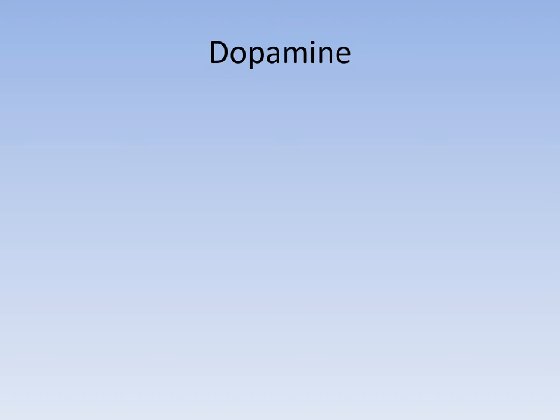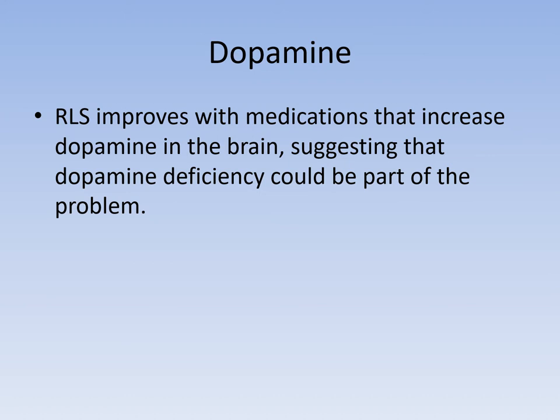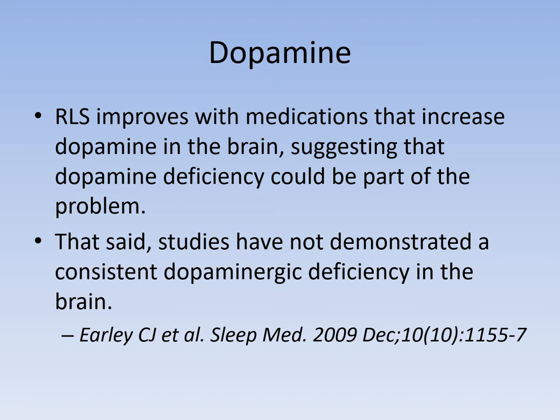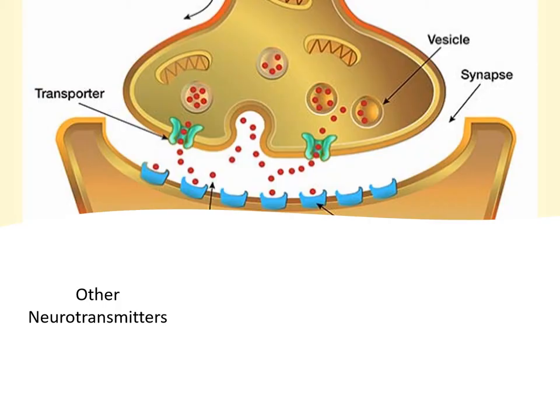It has long been speculated that dopamine plays a role in the pathogenesis of restless leg syndrome, because restless leg syndrome improves with medications that increase dopamine in the brain, suggesting that dopamine deficiency could be part of the problem. However, studies have not demonstrated a consistent dopaminergic deficiency in the brain. Brain dopamine imaging has yielded inconsistent results — some with high levels, some with low — so it's not clear that dopamine deficiency is part of the pathogenesis.